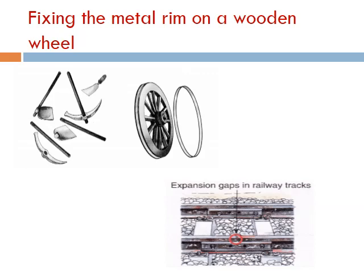And this is how a metal rim is fixed on a wooden wheel. Another very common example of expansion on heating is seen in railway tracks. Small gaps are left between the railway tracks to allow space for expansion in summer.